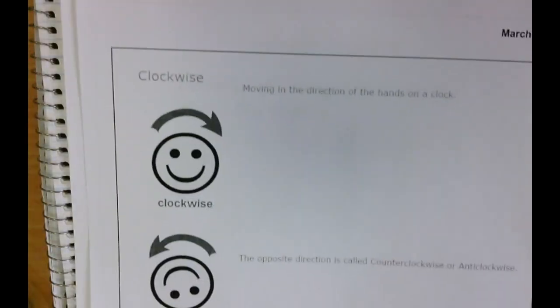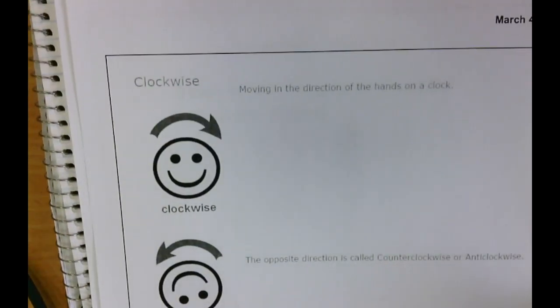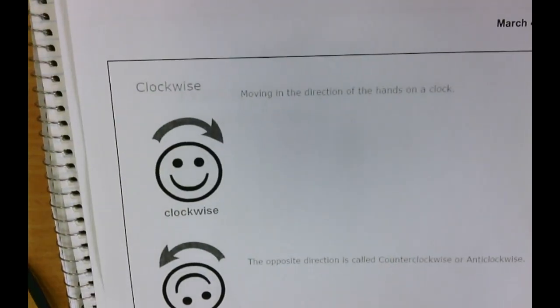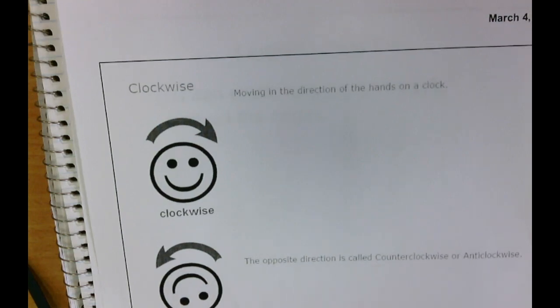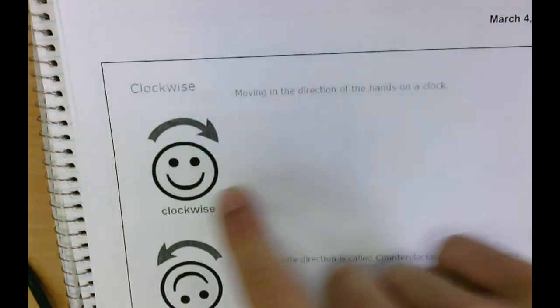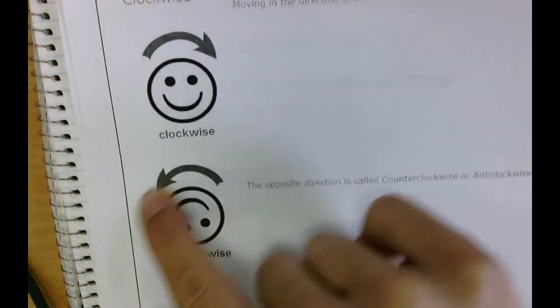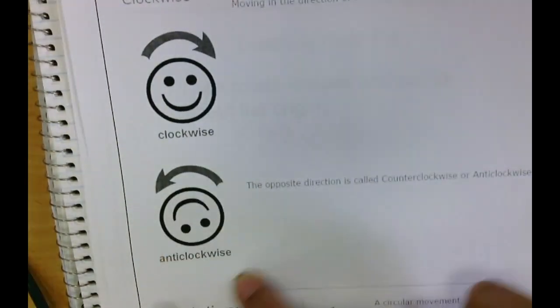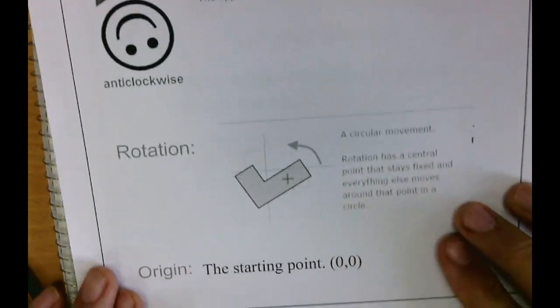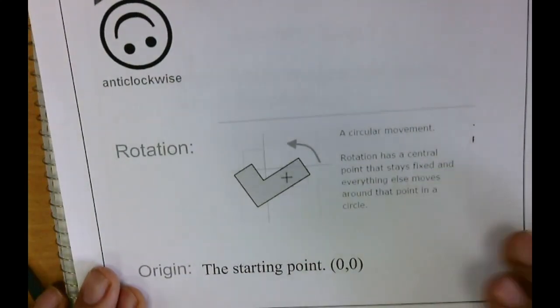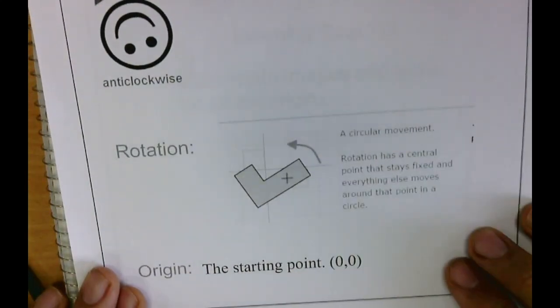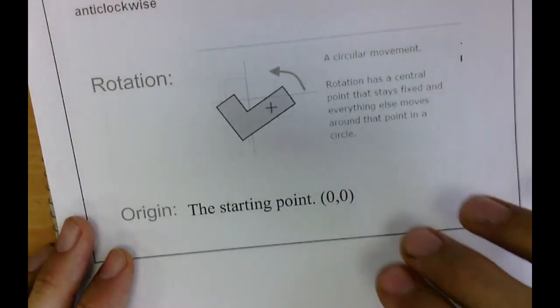Let's introduce some vocabulary today. This is so very important. A clockwise motion - a clockwise direction is when we're moving in the hands of a clock. Counterclockwise is when we're moving in the opposite direction of the clock. A rotation is how we'll be moving things today. Rotations have a central point that stays fixed and everything else moves around that point. And of course, our starting point is the origin.